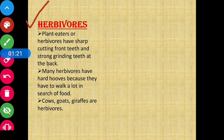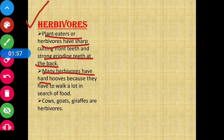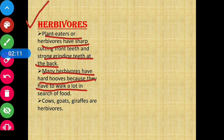The first category is herbivores. Plant eaters or herbivores have sharp cutting front teeth and strong grinding teeth at the back. The back teeth are the grinding teeth and those are very strong. Many herbivores also have hard hooves because they have to walk a lot in search of food — that is why they have hard hooves.